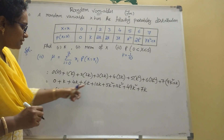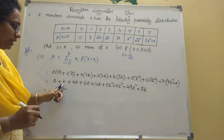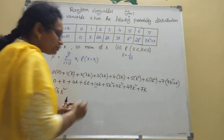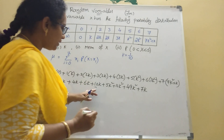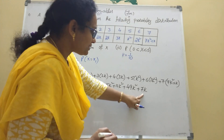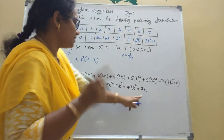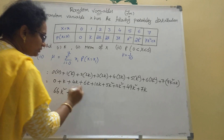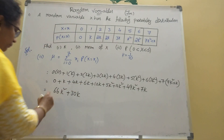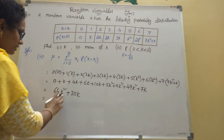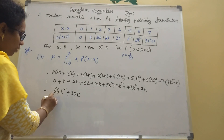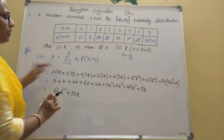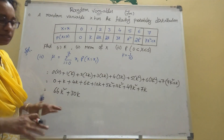For the k terms: k plus 4k is 5k, plus 6k is 11k, plus 12k is 23k, plus 7k is 30k. So the mean equals 66k-squared plus 30k. Now substituting k equals 1/10: 66 times (1/10)-squared plus 30 times (1/10).